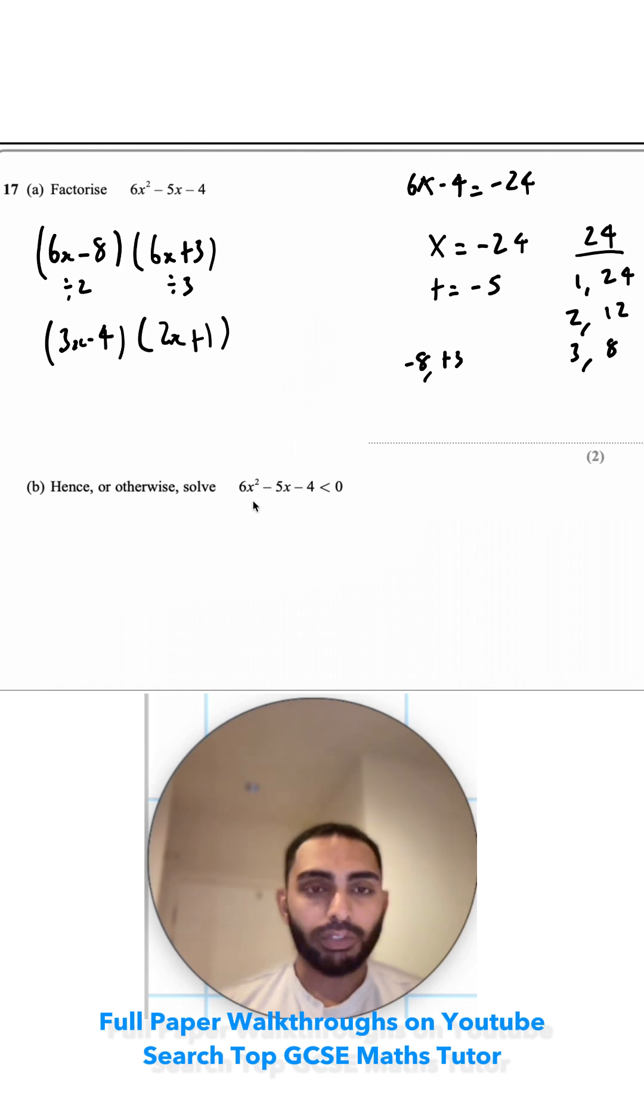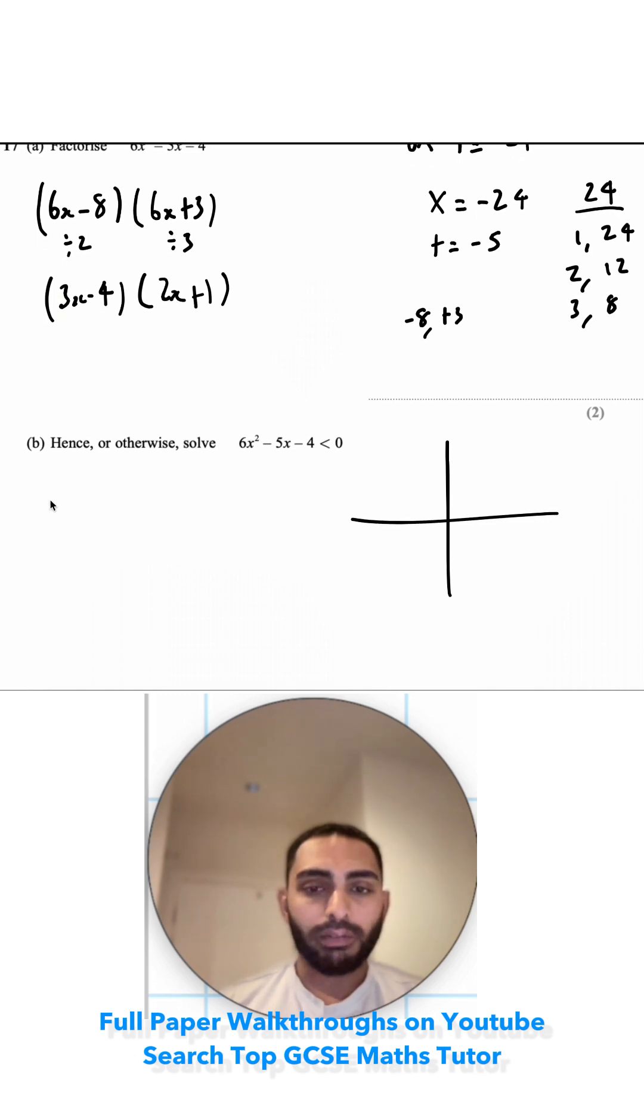Hence or otherwise, solve the 6x squared minus 5x minus 4 is less than 0. So we're just imagining, if we had this on a graph, we're looking for where is it underneath the x-axis. So let's just put both of these points on. We've got 3x minus 4. If we make it equal to 0, we can solve it. And we've got 2x plus 1, which is equal to 0.